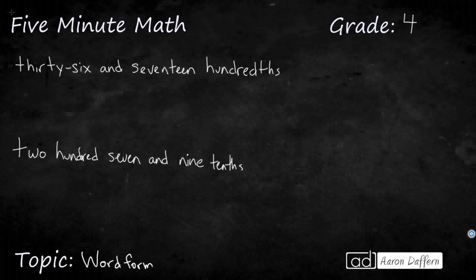So we have two examples on the screen here, 36 and 17 hundredths, and 207 and 9 tenths. What I want to do is first write them in standard form, but I also want you to see how we can relate each of those to specific place values. Because sometimes when we're looking at place value in 4th grade, we need to go straight from a word form to the value of a digit in a certain location.